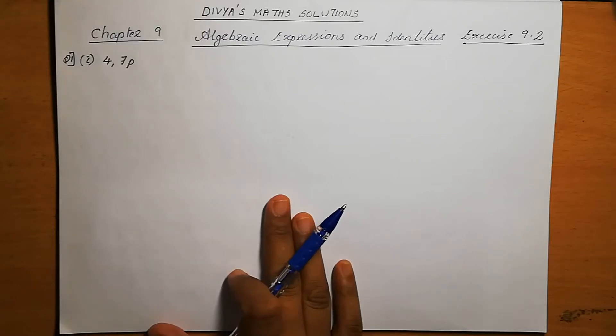Dear students, welcome to Divya's Max Solutions. Today we are going to discuss Chapter 9, Algebraic Expressions and Identities, Exercise 9.2.